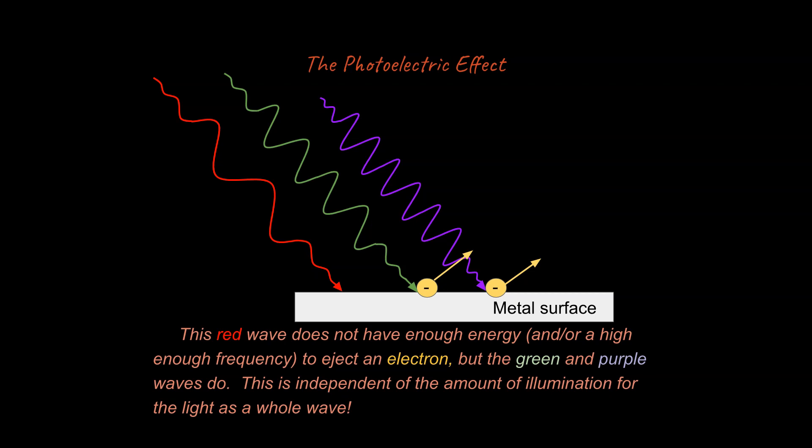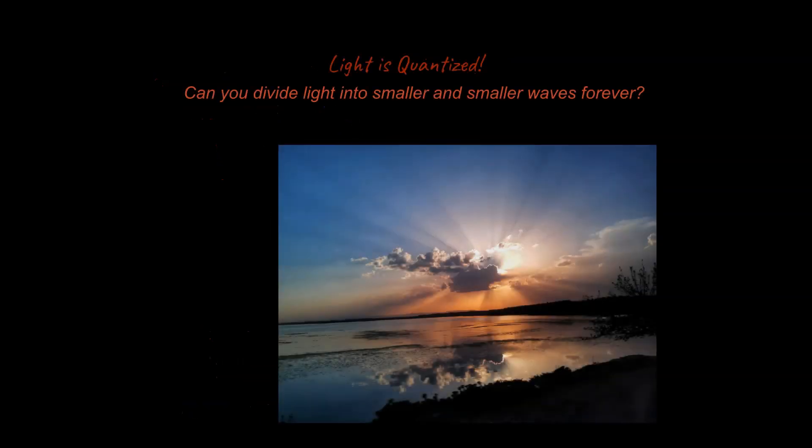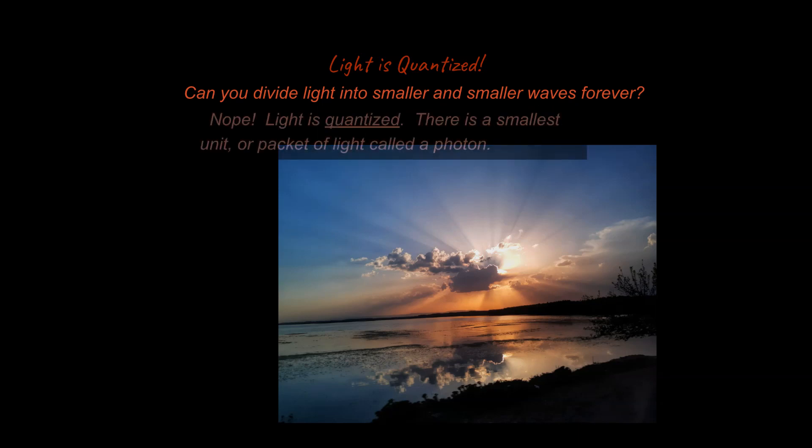In fact, there's a name for this. The smallest unit of light you can have is called a photon. And we say that light is quantized. What does that mean? That means you can have the smallest packet of light possible. It's either you have a photon or you do not have a photon. You can't get half a photon. So it turns out that we used to think that you can divide light into smaller and smaller waves forever and ever, but that's not true.